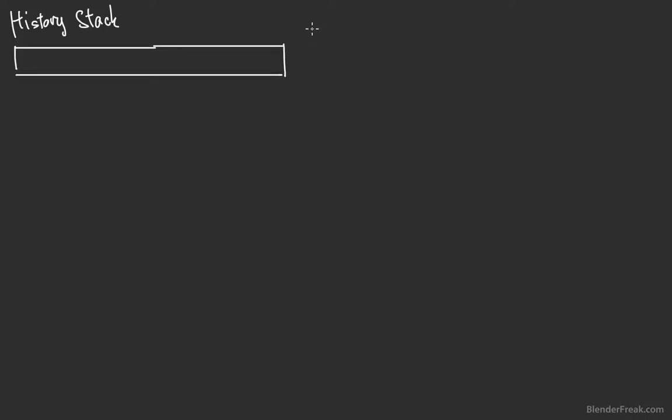Basically what we are going to do is create something like a history stack, which in our case in Python is going to be a list. We'll say that the maximum number of items in the history is going to be eight. We can call these items something like history stamps.